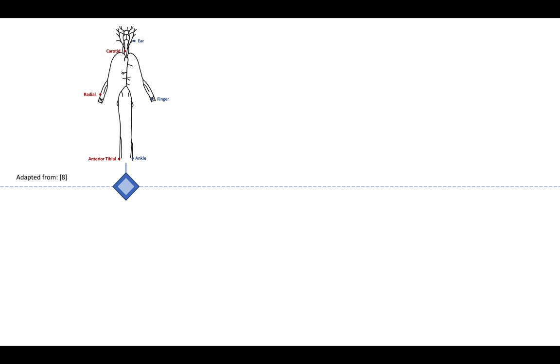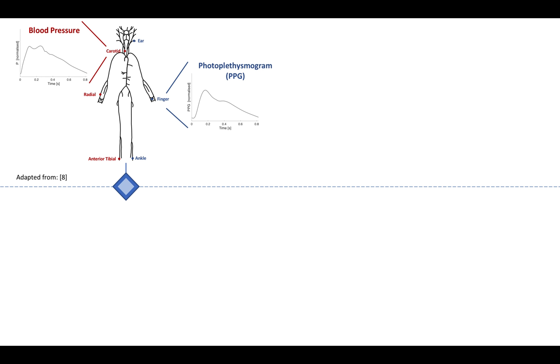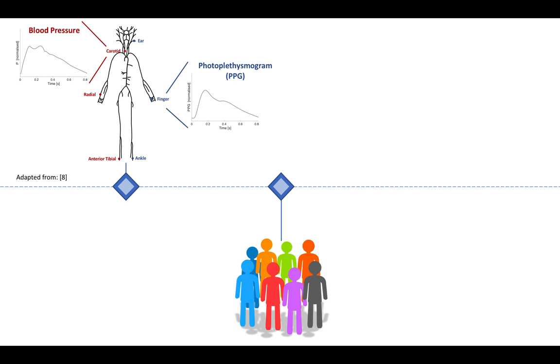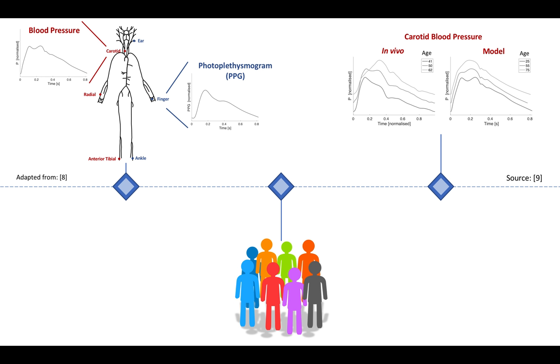The aim of this work is to construct a database of pulse waves representative of a healthy adult population for developing pulse wave algorithms. Firstly, a model of pulse wave propagation was used to simulate pulse waves including the PPG at a range of measurement sites. Secondly, additional simulations were performed after adjusting the model to mimic a population sample consisting of healthy adults of different ages exhibiting a wide range of cardiovascular properties. Thirdly, the simulated pulse waves were compared with in vivo data to investigate how realistic they are.